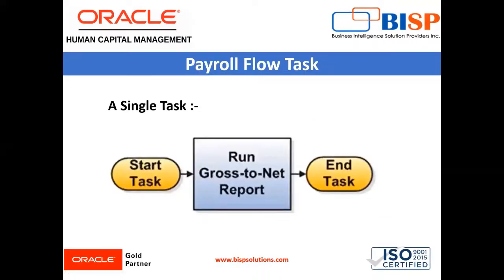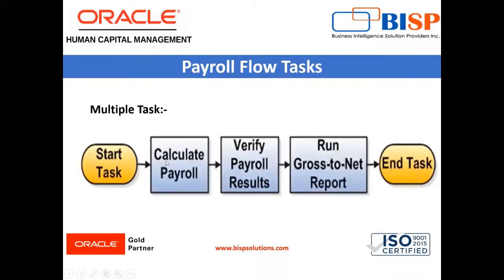Payroll flow tasks are created when a flow pattern is created. A flow pattern has a start task and an end task, and it has two types of tasks: single task and multiple tasks. In a single task, you can see it has only one task — Run Gross to Net Report. In a multiple task flow, tasks are ordered in a sequence corresponding to a phase of a typical payroll activity, for example: Start, Calculate Payroll, Verify Payroll Result, Run Gross to Net Report, and then End.